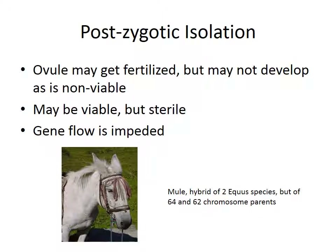If in spite of all these barriers — mechanical, behavioral, and all the others — two different species still manage to mate, there are other ways to stop the species from mixing: postzygotic isolation barriers. You might get the egg fertilized, but it's not going to develop — it will be non-viable. Or if it is viable, because they're closely related species, they will grow up but be sterile and still can't reproduce. So the gene flow is impeded.